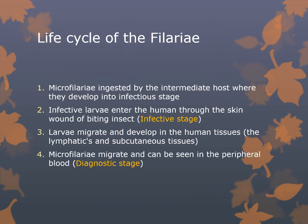In the filaria life cycle, microfilaria are ingested by the intermediate host where they develop into the infectious stage. Infected larvae enter the human through the skin wound of a biting insect. The larvae migrate and develop in the human tissues — in the lymphatics and subcutaneous tissues. Finally, microfilaria migrate and can be seen in the peripheral blood smear — that's the diagnostic stage.